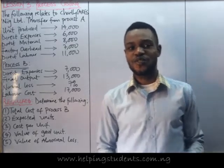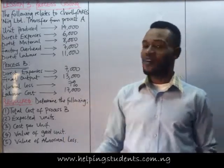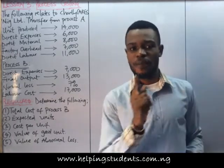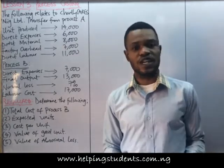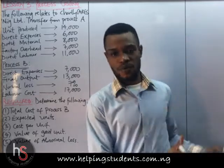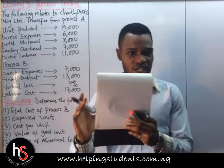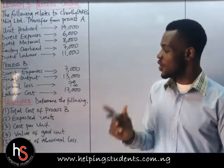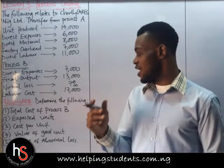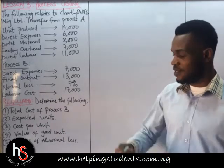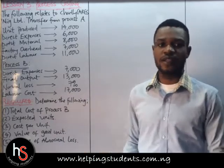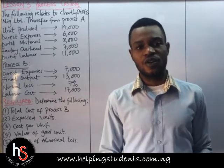Hello and good day. We are highly welcome for today's tutorial. On the board we'll have a question under process costing, lesson three. Remember the first video explained how to get an expected output, the second video covered how to transfer from one process to another. In this video, you are going to learn how to determine your total cost per unit, total cost of production, the expected unit, the value of the good unit, how to identify your abnormal loss or abnormal gain, and how to make use of the normal loss.